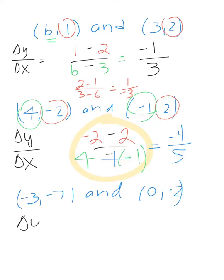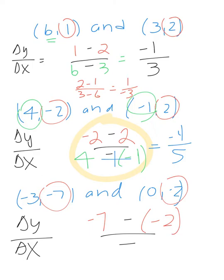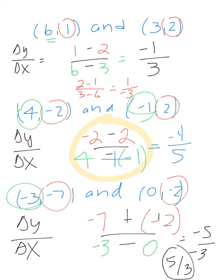Next one is negative 3, negative 7, and 0, negative 2. So I'm putting in those minus signs. These are my y's. We have negative 7 minus negative 2, and then we have negative 3 minus 0, which becomes negative 7 plus 2, which is negative 5. And negative 3 minus 0 is negative 3. Those two negatives will make it a positive, which gives you 5 thirds as your answer.